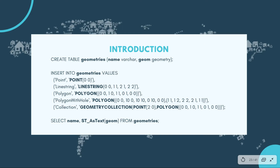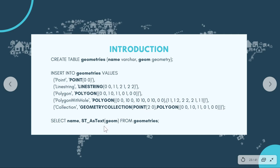We are going to first create a table using the CREATE TABLE query, giving it a column called name and the type of data it takes in, plus a geometry column which takes in the geometry type. Then we are going to insert into the table some values: a point, a line string, a polygon with a hole, a collection, and also we are going to check the geometries of the table.